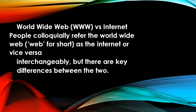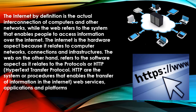World Wide Web (WWW) versus Internet. People colloquially refer to the World Wide Web, or Web for short, as the Internet, or vice versa, interchangeably. But there are key differences between the two. The Internet by definition is the actual interconnection of computers and other networks, while the Web refers to the system that enables people to access information over the Internet. The Internet is the hardware aspect relating to computer networks, connections, and infrastructures. The Web, on the other hand, refers to the software aspect, relating to protocols such as HTTP (hypertext transfer protocol), which are the systems or procedures that enable the transfer of information in the Internet, as well as Web services, applications, and platforms.